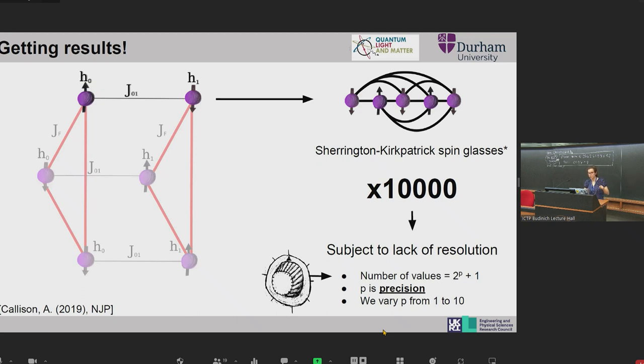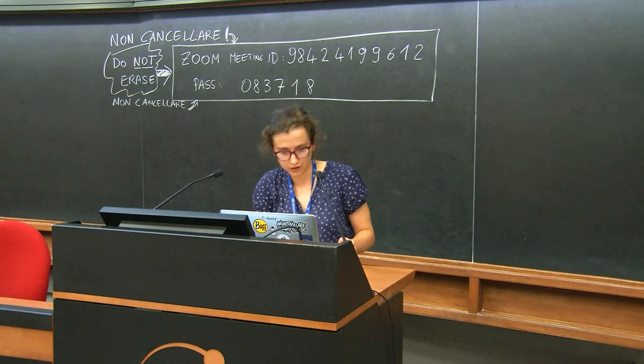We then subject them to a lack of resolution. That is, that we define a number of allowed values between minus one and plus one, and that the fields and couplings have to round to, and these number of values are defined by two to the p plus one, where p we call the precision. We then vary this precision from one to 10. So the idea behind that is, as you're increasing the precision, you're getting closer to the optimization problem that you actually want to represent. And so once we've applied the lack of resolution, we next measured something we called fraction correct for the singular instances.